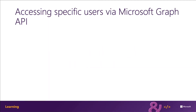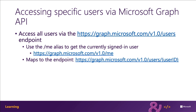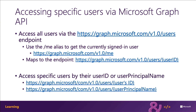There are two different ways that you can access users through Microsoft Graph. You can access the signed-in user through the me alias at graph.microsoft.com/v1.0/me. This alias maps to the same endpoint as going to /users/{ID} of the currently signed-in user. To access a specific user, use either their ID or their user principal name — for example, /users/{ID} or /users/{UPN}.